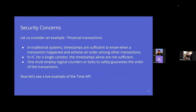This creates a security concern for financial transactions. In a traditional system you can use timestamps to know when transactions happened and to order them. But on the IC, for a single canister, timestamps alone are insufficient for ordering if multiple transactions execute in the same block — they'll all share the same timestamp. The solution is to use logical counters or clocks to safely guarantee transaction ordering.